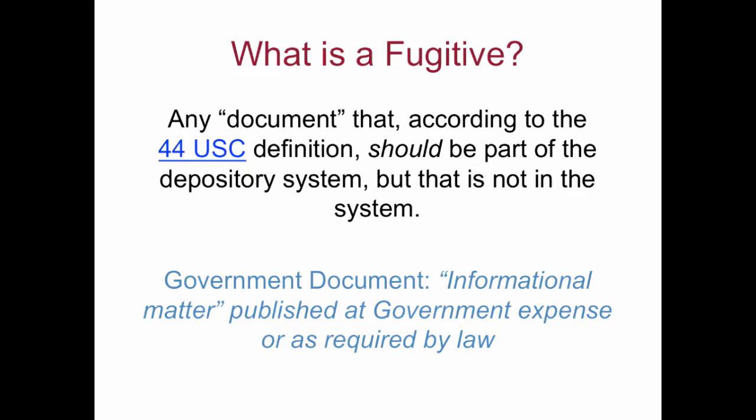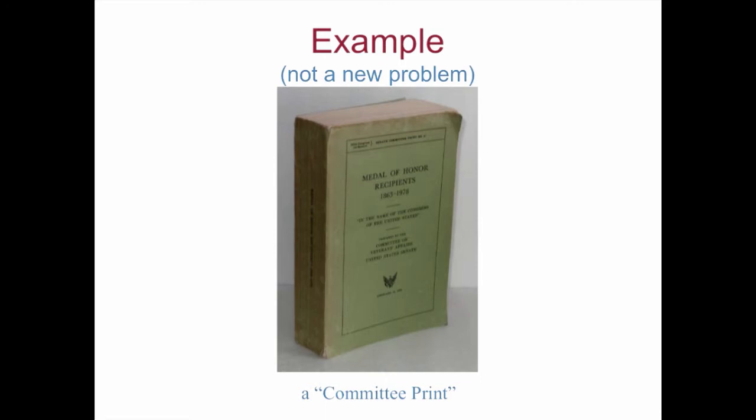It's worth noting that the Title 44 definition of government publication has some exemptions for things like classified documents and documents that are for official use only. Those kinds of documents are not fugitive because they're excluded from the definition. What kinds of things become fugitive? Almost anything can be. Here's an example that looks like everything else on your document shelves — it's a committee print, a category of document that for many years was considered as internal. Until the 1970s, committee prints were not well distributed to the public or the FDLP.